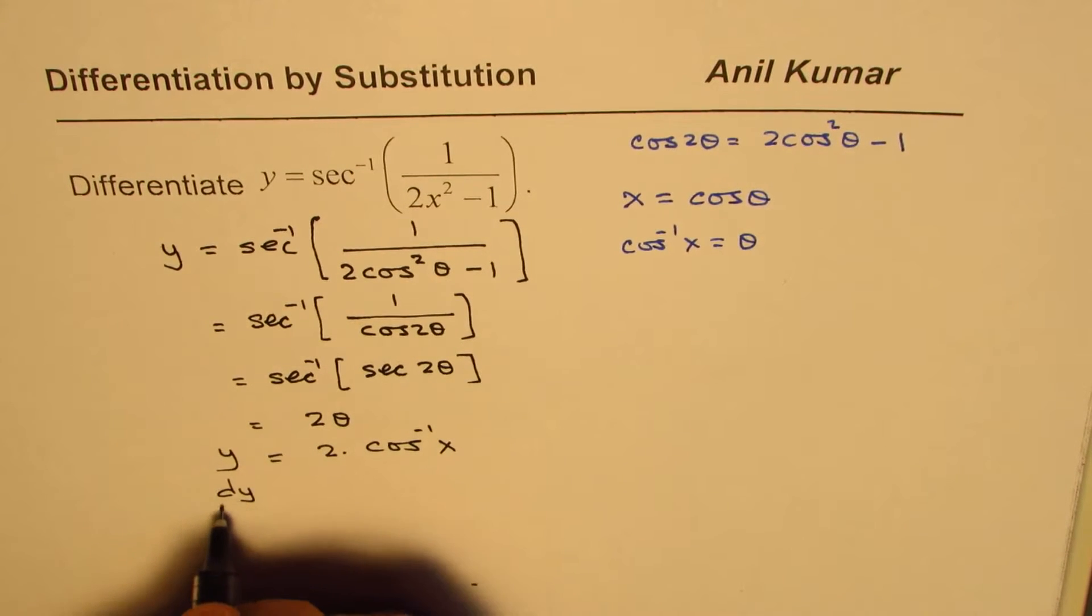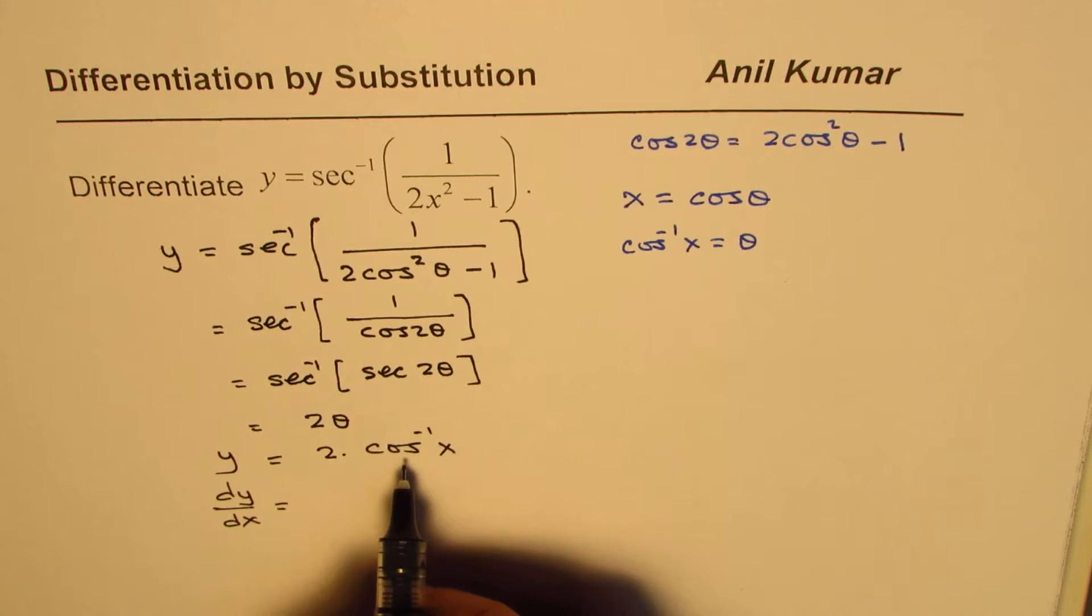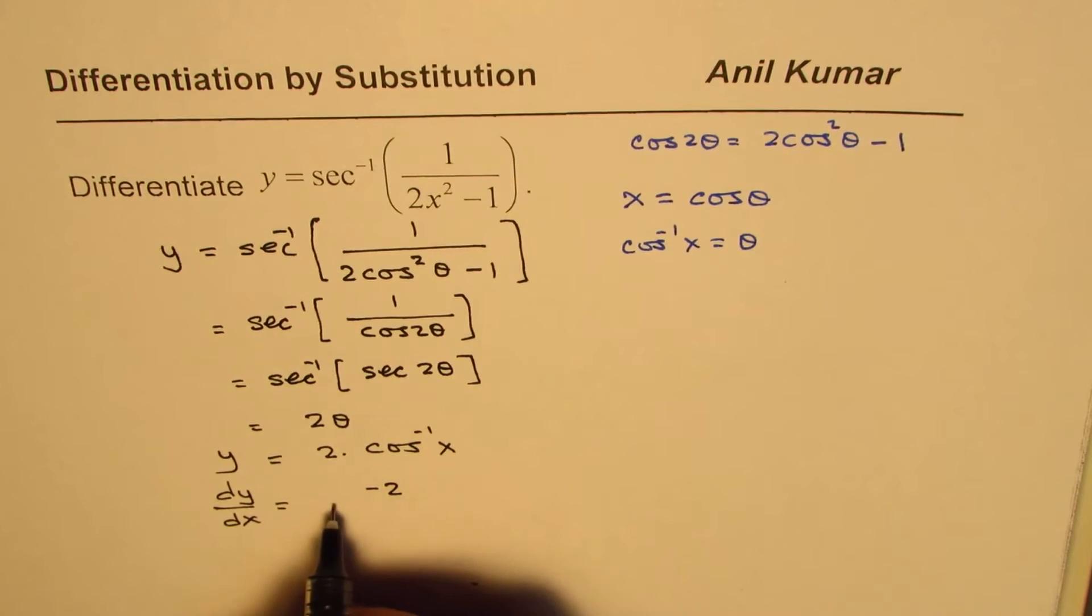Now, what is dy dx? So, dy dx will be equals to the derivative of, this is a constant, cos inverse x, which is minus 1 over square root of 1 minus x square. So, we can write this as minus 2 times 1 as minus 2 over square root of 1 minus x square.